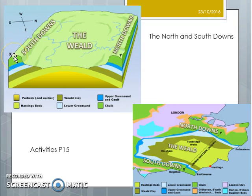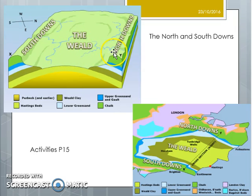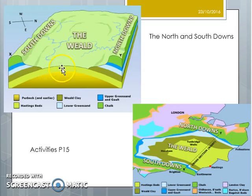The downs on either side are still capped with chalk, and because they are still capped with chalk, we get particularly high land there. Whereas the area in the middle, where these softer sediments have been largely eroded away, we end up with a lower area. We also get, because of the shape of the anticline, a shallower slope on the outer sides, whereas inside the Weald the inner areas have a much steeper slope.